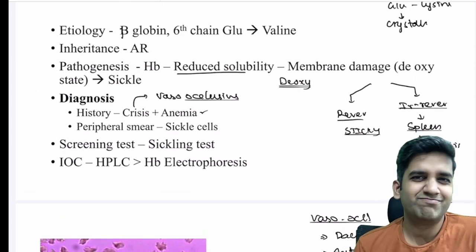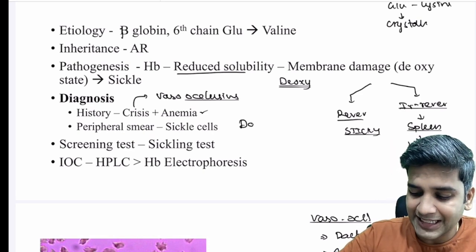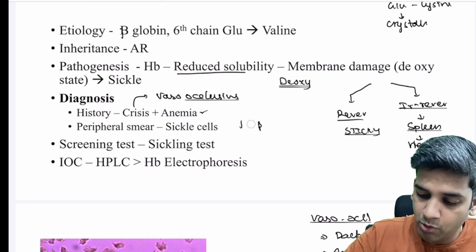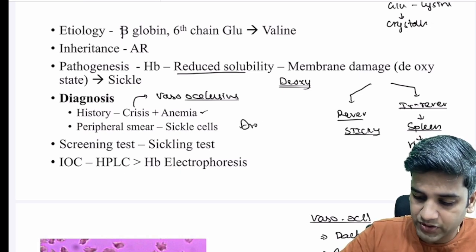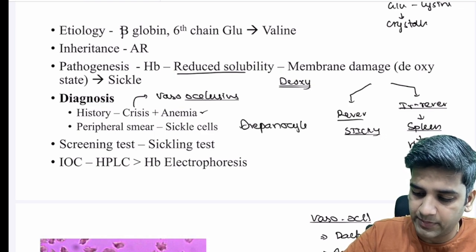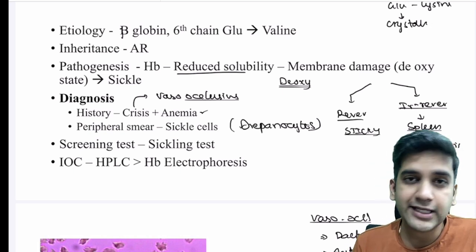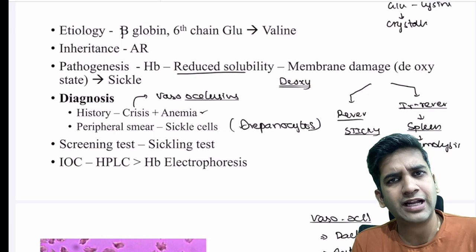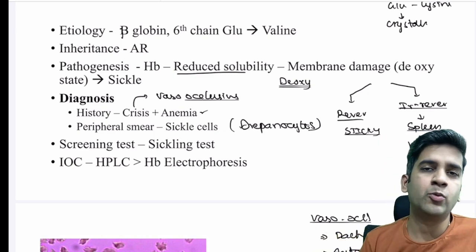On peripheral smear, everyone will recognize sickle cells — the other name for sickle cells is drepanocytes, as they look like a boat. Sickle cell anemia can also show spherocytes and target cells on smear. All of these are evidence of membrane damage, but seeing sickled RBCs is the definitive finding.